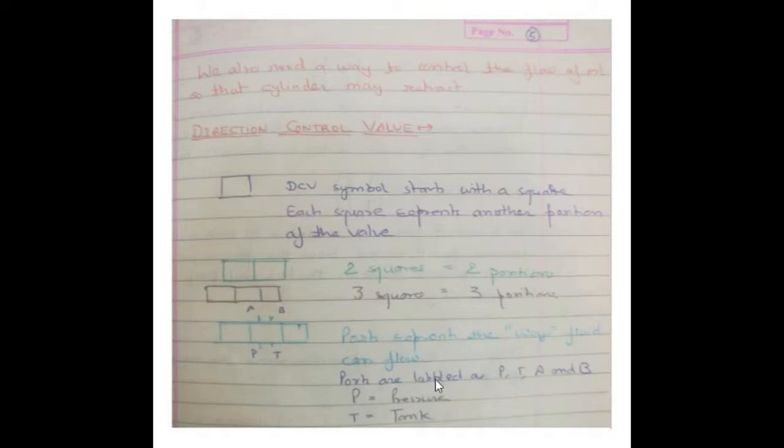Now in this valve you can see four ports: P, T, A, and B. The ports are labeled P, T, A, and B. P is known as pressure port, T is known as tank port.